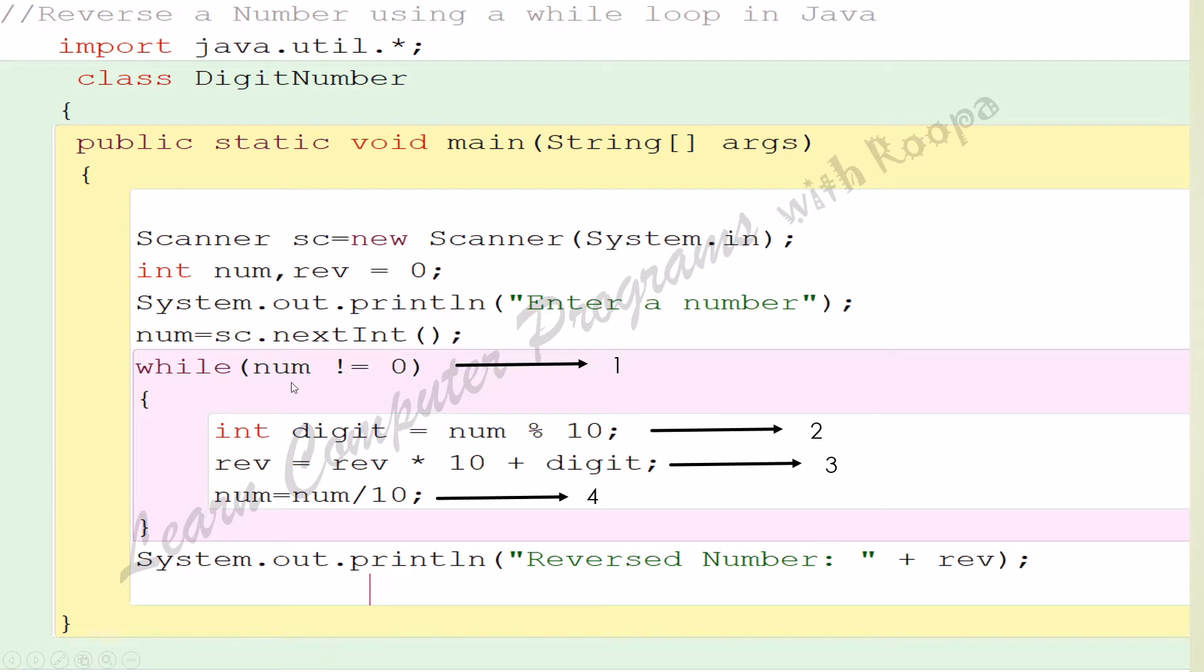For this, we use a while loop: while num not equal to 0, and we are going to extract each digit of the number. The complete explanation of this part I have given in another video on how to extract the digits individually.